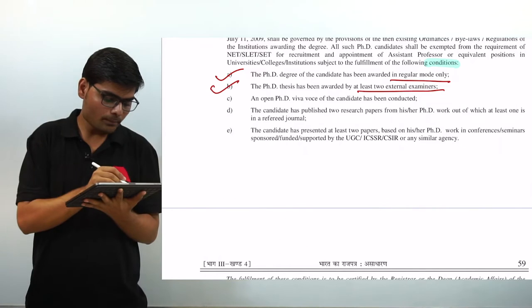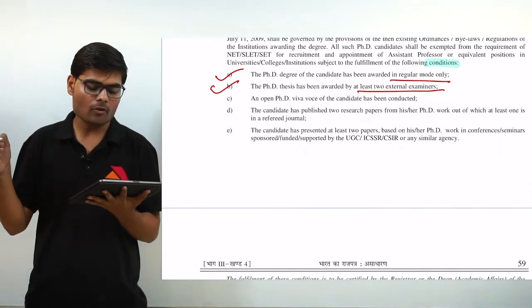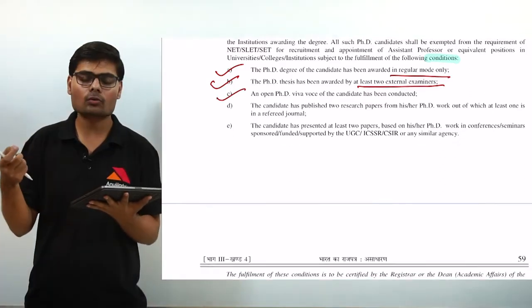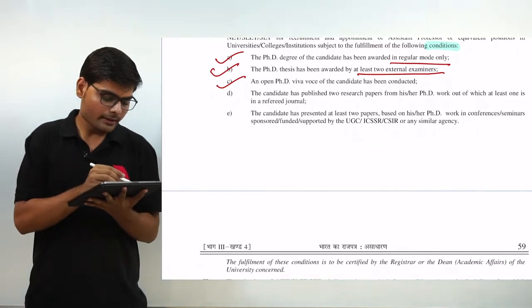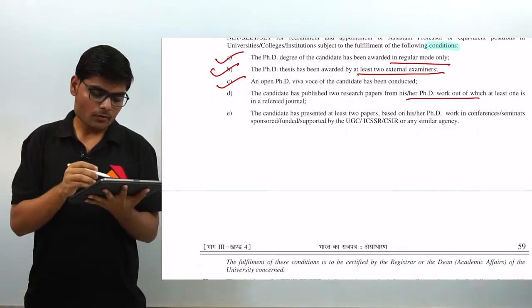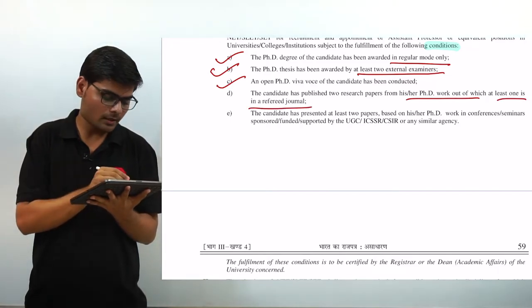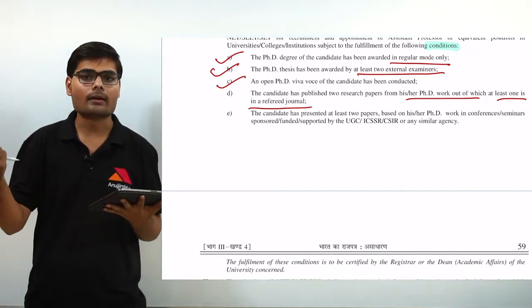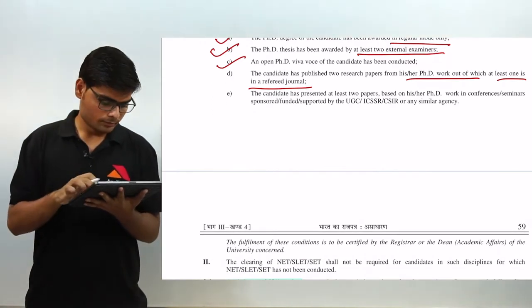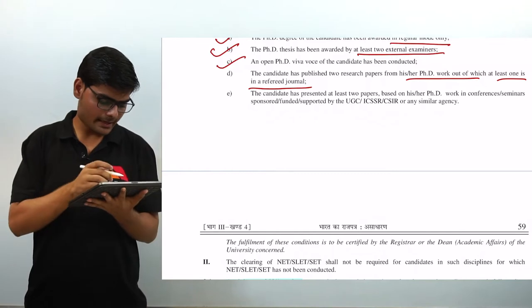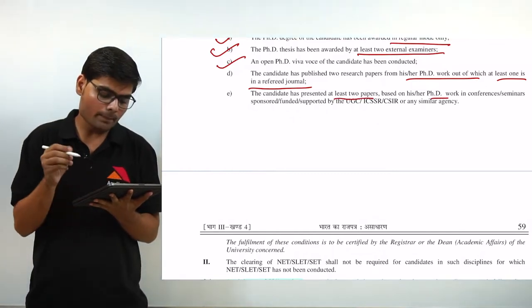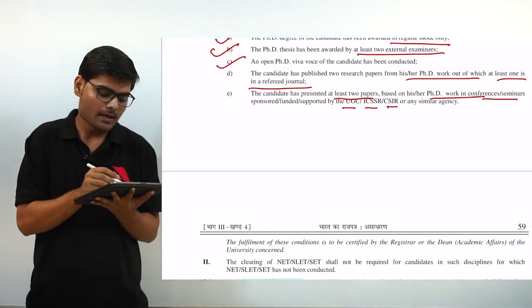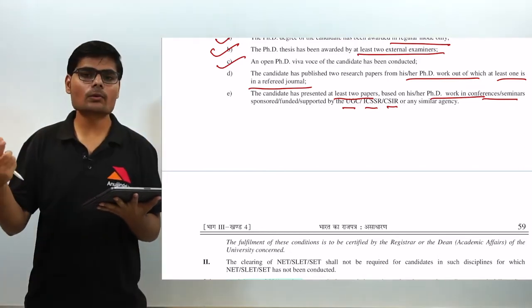Point three states that an open PhD viva voce for the candidate must have been conducted. Point four says the candidate must have published two research papers from their PhD coursework, out of which at least one is in a referred journal. The referred journal list is also available on the UGC website — you can search UGC CARE to get the list of approved journals. Clause E states that the candidate must have presented at least two papers based on PhD work in conferences or seminars sponsored or funded by UGC, ICSSR or CSIR.